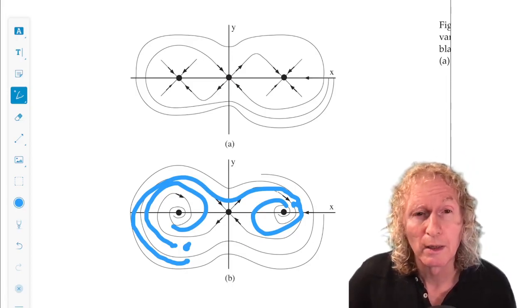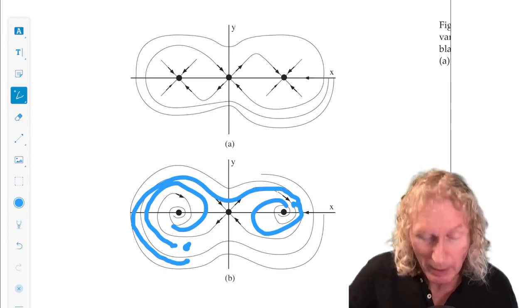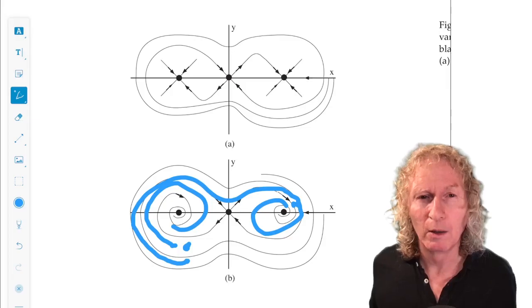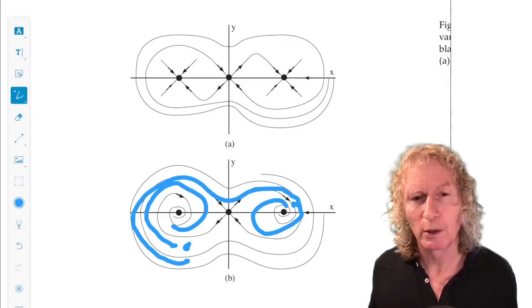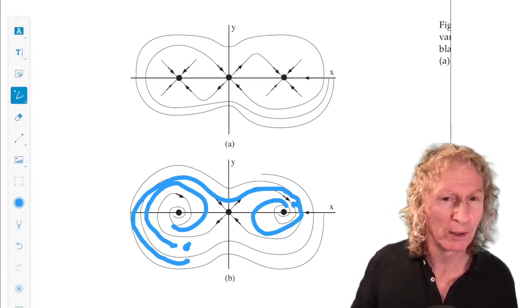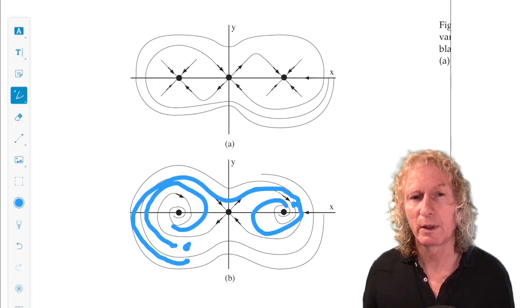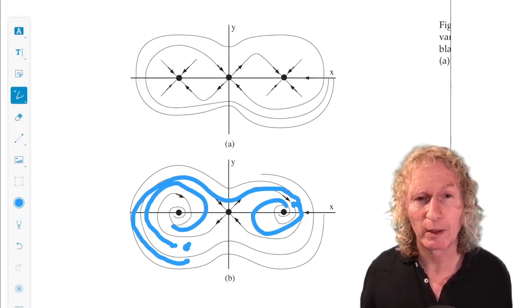So the unstable manifold, the stable manifold of the origin somehow is the boundary between points that will go to the right attracting set or the left attracting set. And that's one of the reasons why these stable and unstable manifolds are important.